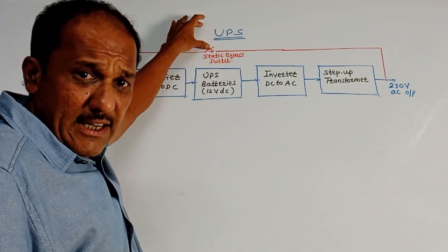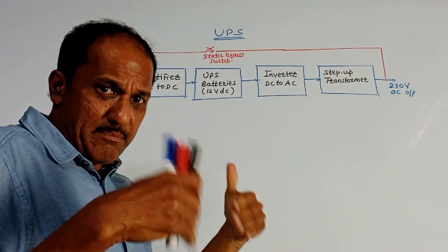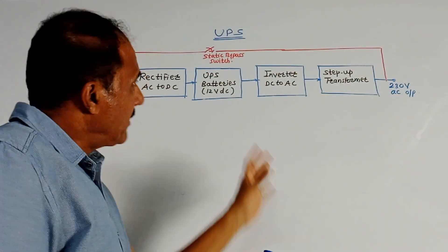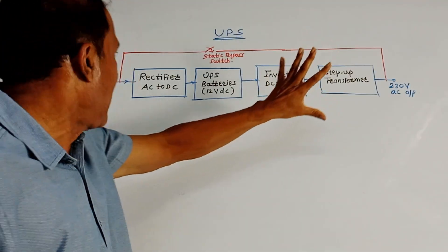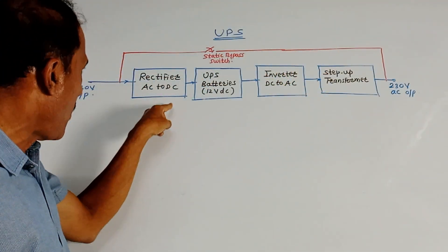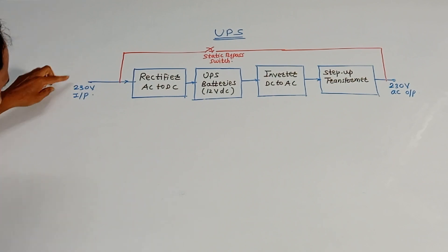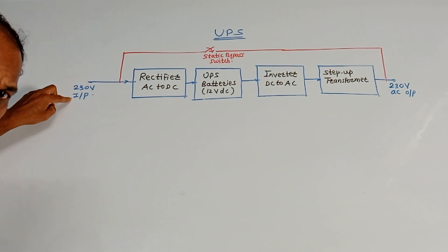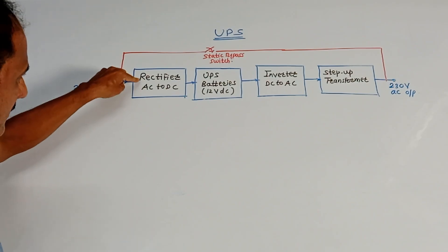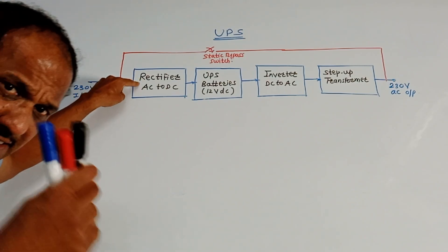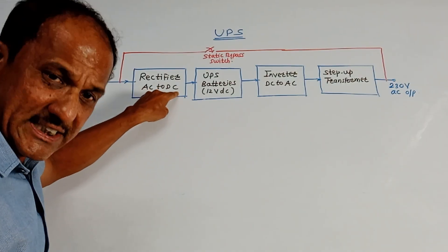As the name indicates, it is Uninterruptible Power Supply — meaning whenever the AC mains fails, at that time the UPS is used to provide the required supply. This is the block diagram of UPS. On the input side we are applying a 230 volt AC input signal. The first block is a rectifier, which converts the AC signal into a DC signal.